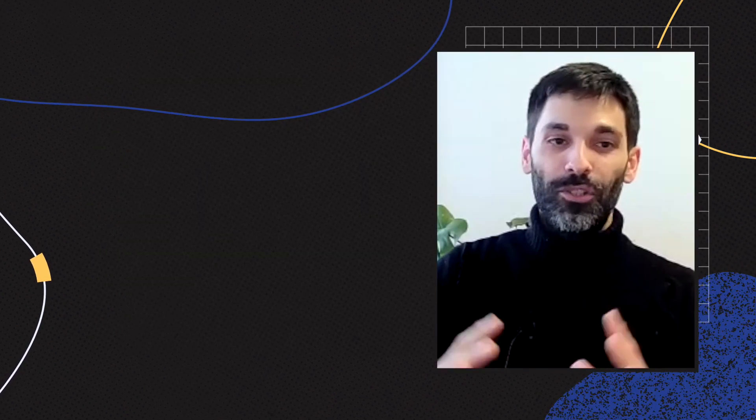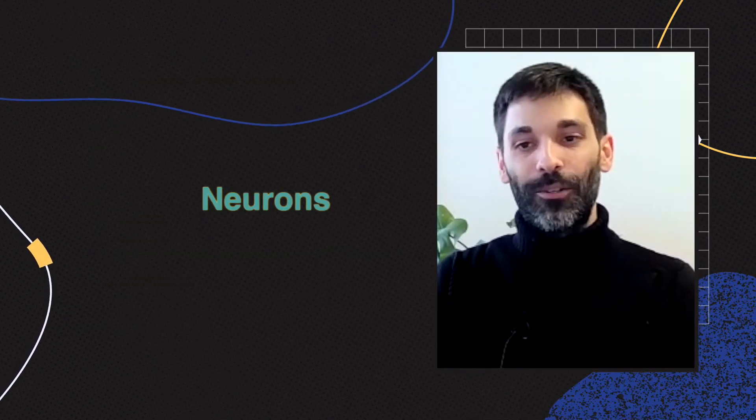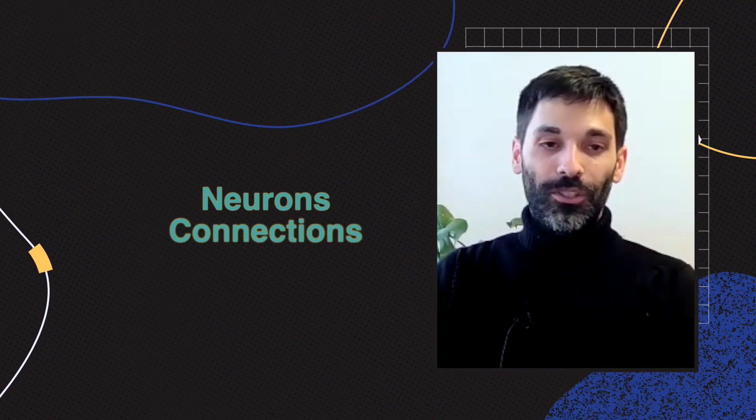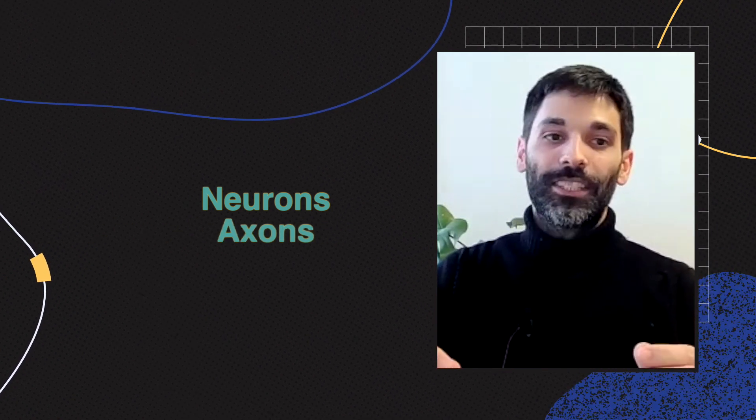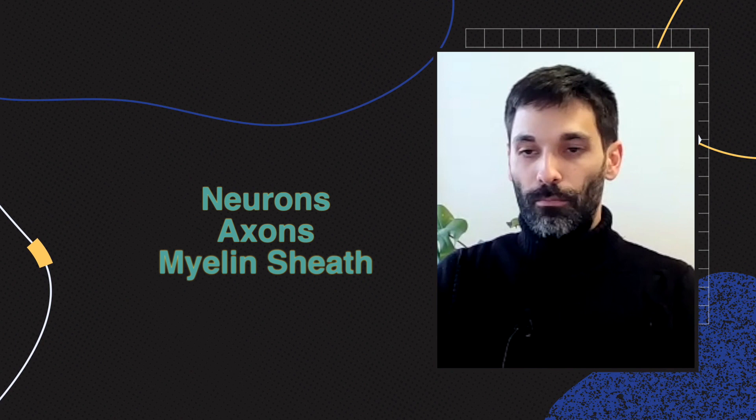This was during high school when I had biology. Our teacher explained the nervous system to us - you have neurons, they're structured in a certain way, you have connections between these neurons and these are called axons contained within a myelin sheath, basically a lipid sheath. When I came home, my mom told me that a friend of the family